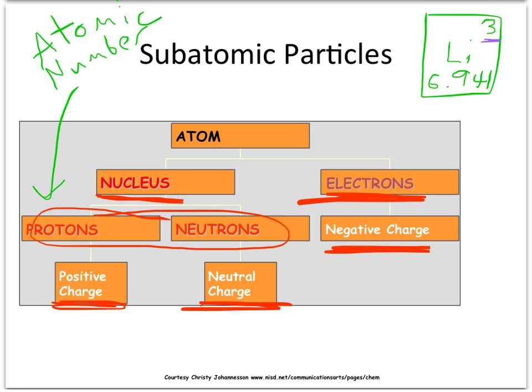That three means that there's no other element or other type of atom that has three protons. Gold doesn't have three protons. Helium doesn't have three protons. The only type of atom that has three protons is lithium.